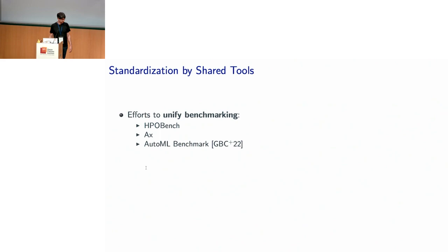This has certainly been recognized and a lot has been done about it. One idea to improve the situation is to try to do a certain standardization by sharing tools among people. There have been efforts to unify benchmarking — for example, HPOBench, AX, and AutoML benchmarks. These frameworks allow you to access different benchmarks along the same umbrella framework, thereby improving standardization.